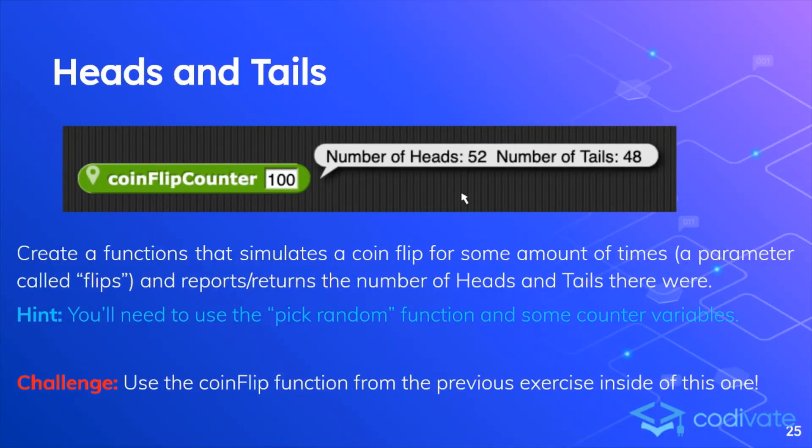Next one is heads and tails. Create a function that simulates a coin flip for some amount of times, a parameter called flips, and reports/returns the number of heads and tails there were. Again, you will need to use a pick random function and some counter variables, otherwise known as script variables to complete this. Another challenge is to use a coin flip function from the previous exercise inside this one.